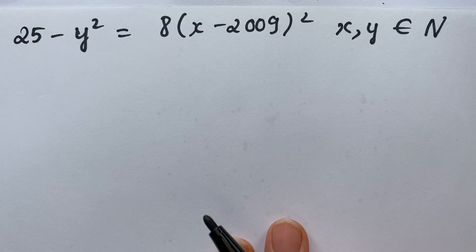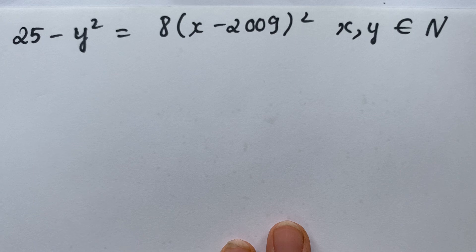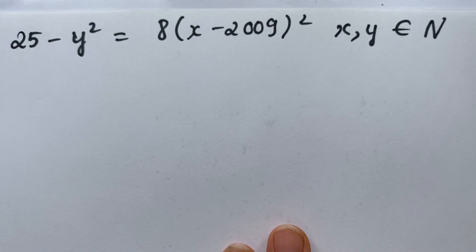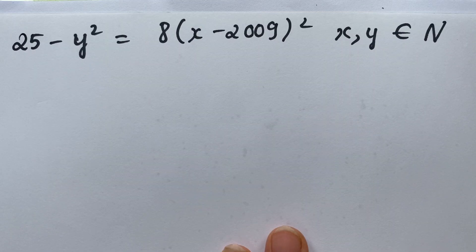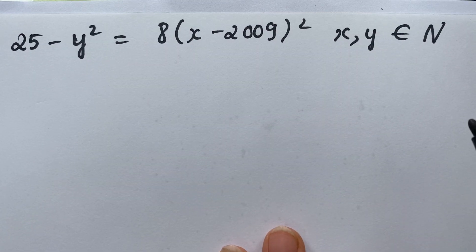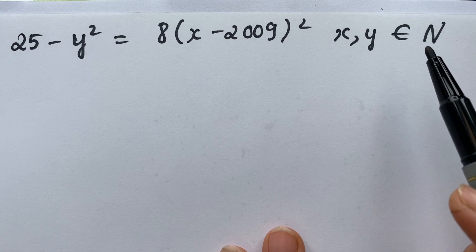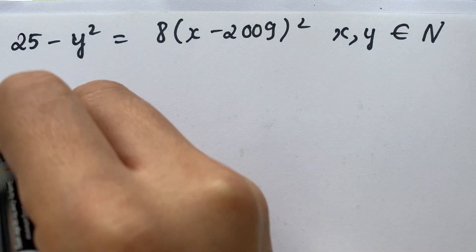Hello everyone! How to find x and y from this equation? In this case, everyone can see that x and y belong to the natural numbers. So, you can rewrite that.